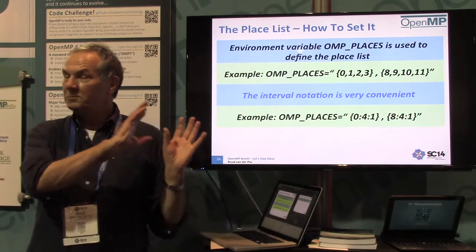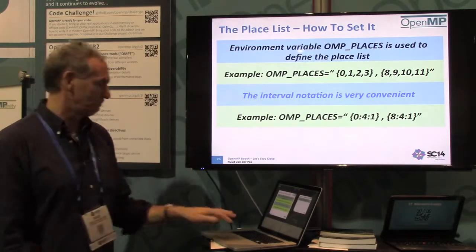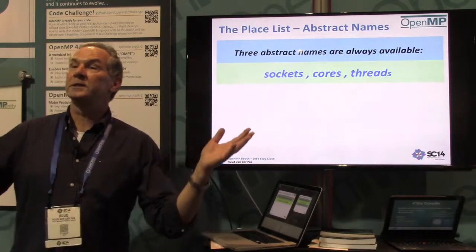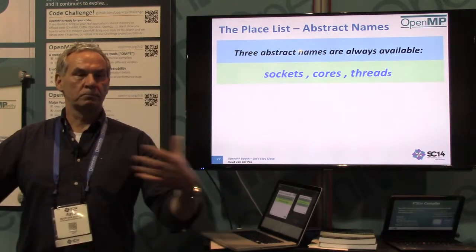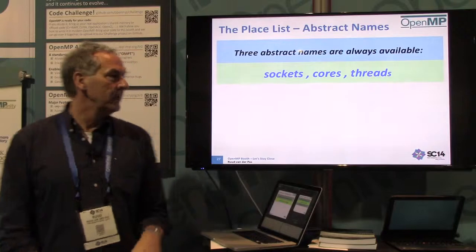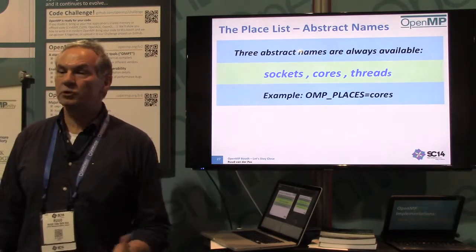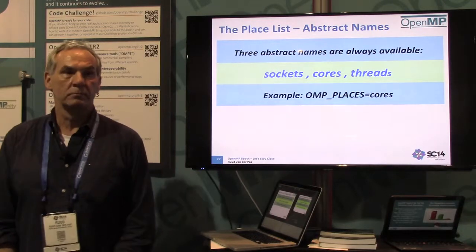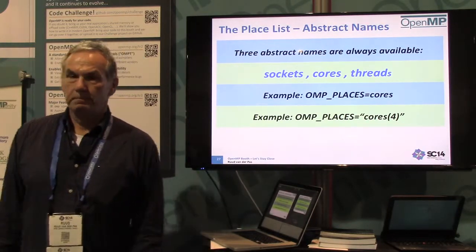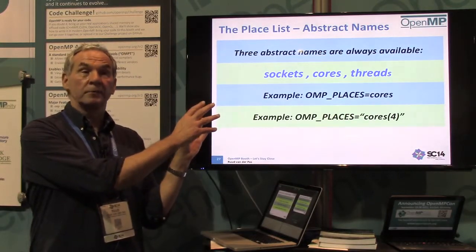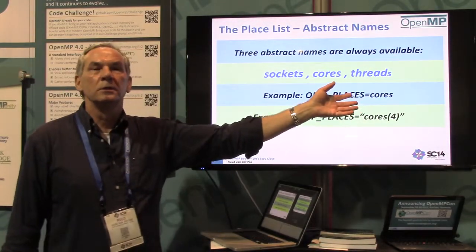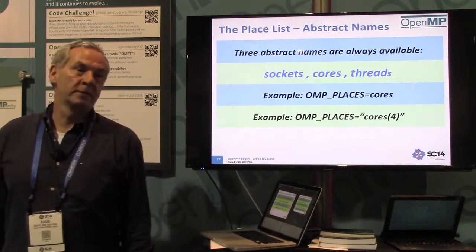There's a more convenient way using abstract names. You can just say my places are all the sockets in the system, or all the cores, or all the threads. So you don't have to worry about numbers — it's more portable. All you do is set OMP_PLACES=cores and the system figures it out for you. You could even say you only want to use four cores. If you want full control, use the numbers; if you're okay with the system picking, use the abstract names. There's also OMP_DISPLAY_ENV to show you what was resolved.